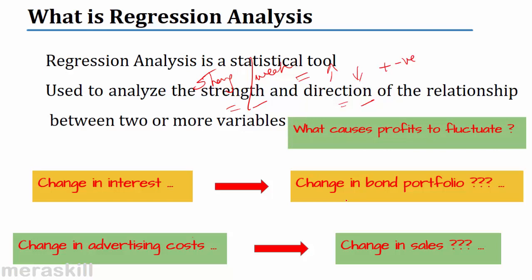What is the effect on profits? What are the factors which influence profits? Why do profits fluctuate? Is it the change in sales, units sold, pricing, or cost? Is it the material cost which is fluctuating? So what does regression analysis do? It is a tool used to analyze the strength and the direction of the relationship between two or more variables.